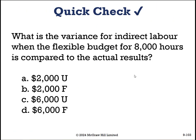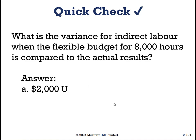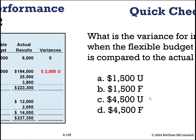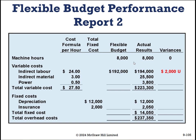If you said A — $2,000 unfavorable — you would be correct. To calculate this, we take our 8,000 units times $24 per indirect labor hour, getting $192,000. We actually incurred $194,000. So that's $2,000 bad news, or unfavorable. It's like saying: I thought I was going to spend $192,000 at McDonald's, but I ended up spending $194,000 — that is bad news to the tune of $2,000.